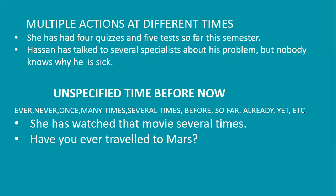Unspecified time before now uses words like: ever, never, once, many times, several times, before, so far, already, yet, etc. These are unspecific expressions you can use in present perfect sentences. For example: 'She has watched that movie several times,' 'Have you ever traveled to Mars?'